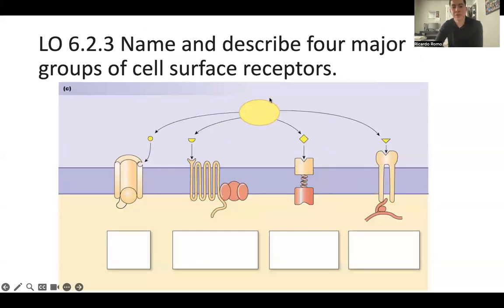Our third one is going to be to name and describe the four major groups of cell surface receptors. First one that we're going to have is our receptor channel, which ligand binding closes or opens a channel.